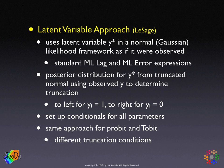This is basically the same for probit, except for the truncation condition. For probit, for y equals 1 it's truncated to the left, and for y equals 0 it's to the right. In the Tobit, it will be for y observed versus y unobserved, so that's a little more complicated.